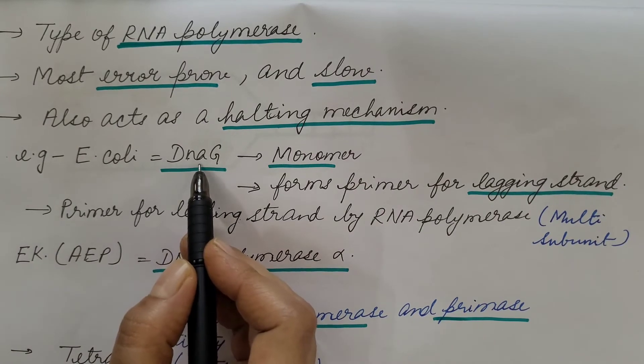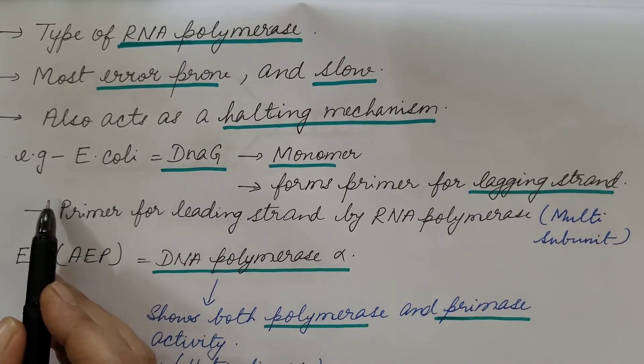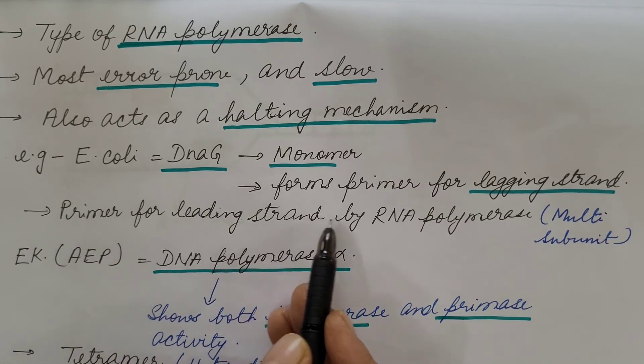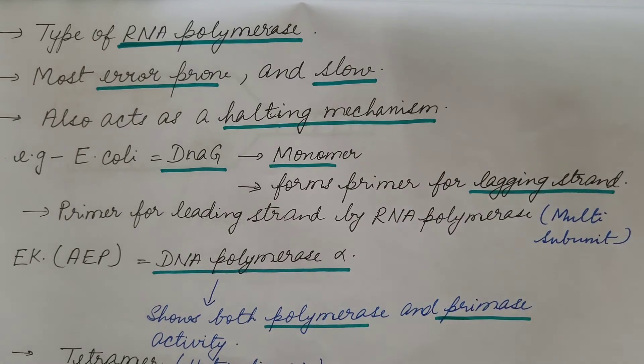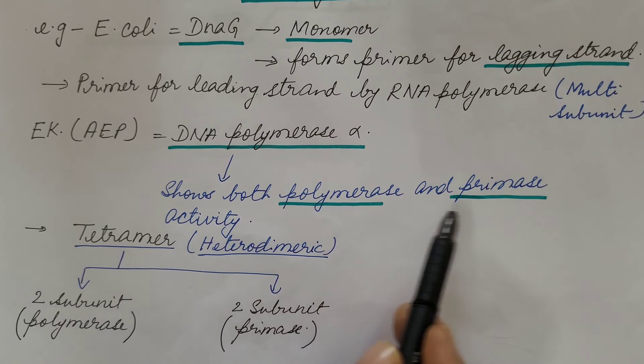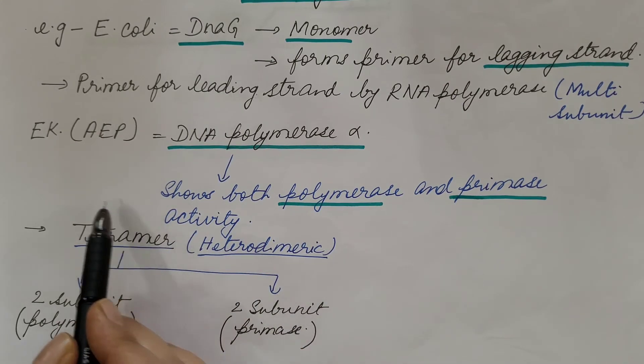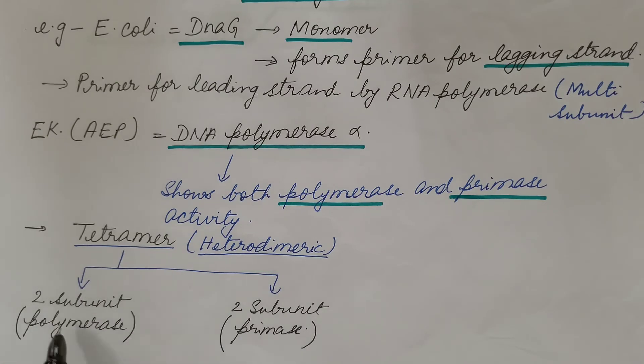In E. coli, it is DNA G, which is a monomer. It forms the primer for the lagging strand, and the primer for the leading strand is synthesized by certain other RNA polymerase which is multi-subunit. In eukaryotes, it is DNA polymerase alpha, which shows both polymerase and primase activity. It is a tetramer, and this tetramer is heterodimeric. Two subunits serve as the polymerase and two subunits as the primase.